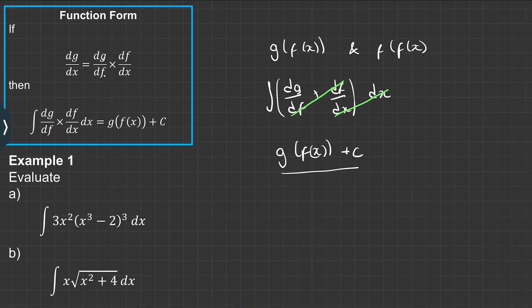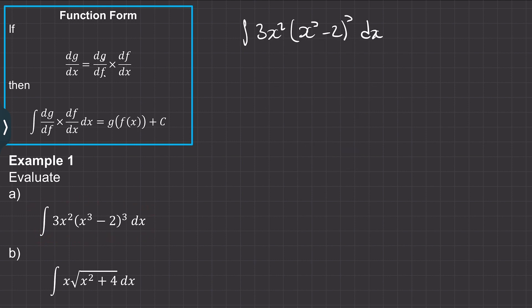We can use this idea to work out the integral in part a. To apply the reverse chain rule in this example, we need to see that the derivative of the x cubed term will give us a 3x squared term, which is this function here. So to get the 3x squared term, we need to begin with this bigger function here. We can say let y equal this bigger function.